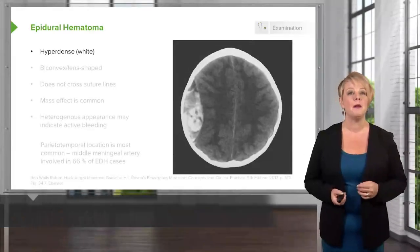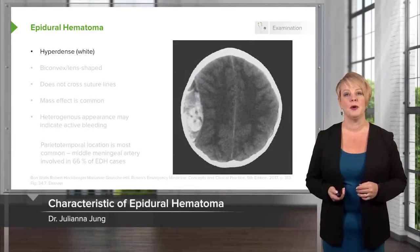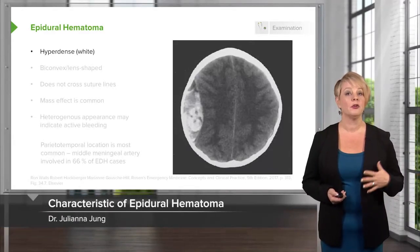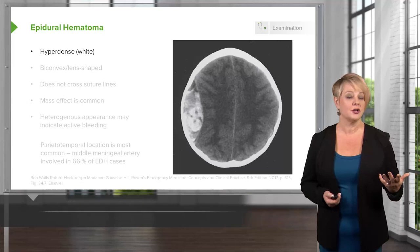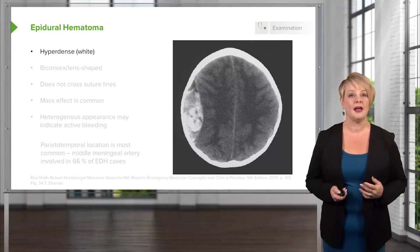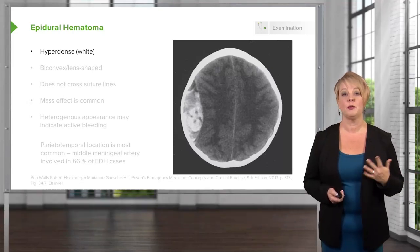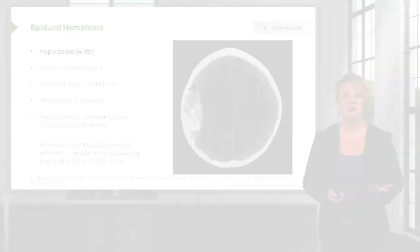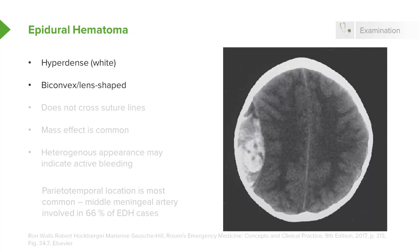Here's an example of an epidural hematoma. You can see that there is a large collection of blood on the right side of the brain, and it's hyperdense, so it's white. It's biconvex or lens-shaped, which is very characteristic of an epidural hematoma.